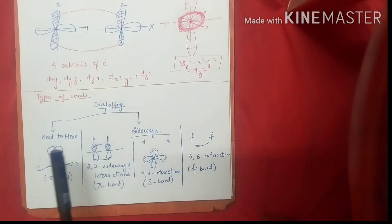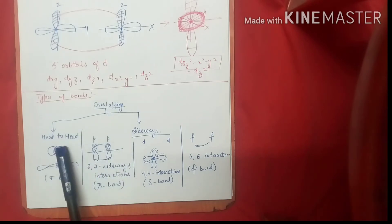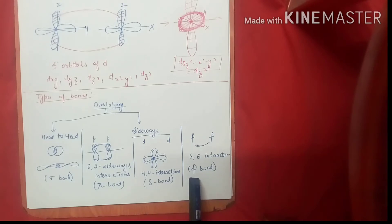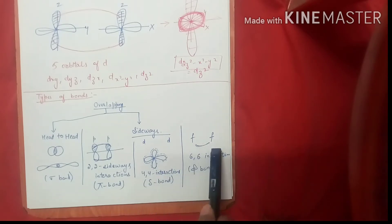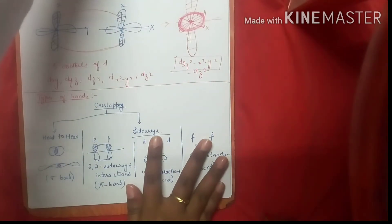So these are the types of overlapping which lead to the formation of different types of bonds. Overlapping can be of two types: head-to-head and sideways. Head-to-head overlapping leads to the formation of your Sigma bond. Sideways overlapping leads to the formation of Pi, Delta, and Phi bonds. 2-2 sideways interaction gives Pi; 4-4 interaction gives Delta; and f-f (6-6) interaction gives Phi.